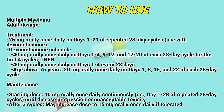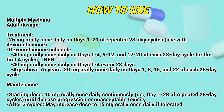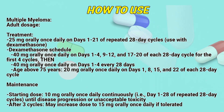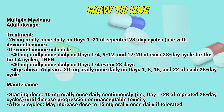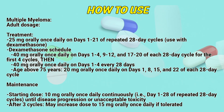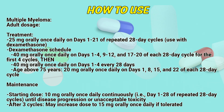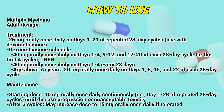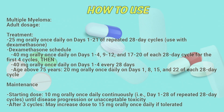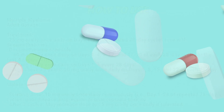Maintenance: Starting dose 10 mg orally once daily continuously, day 1–28 of repeated 28-day cycles, until disease progression or unacceptable toxicity. After 3 cycles, the dose may be increased to 15 mg orally once daily if tolerated.